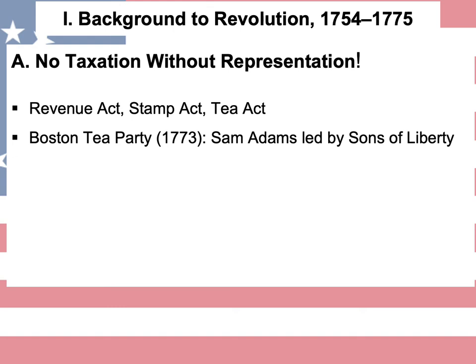Safe to say, the British were not happy. The King was not happy. So the British Crown in 1774 passed the Intolerable Acts, which were meant to punish the colonists and reimpose strict British law over the American colonies.